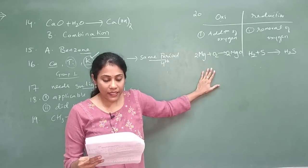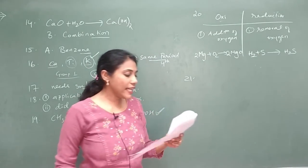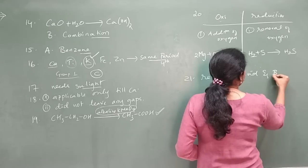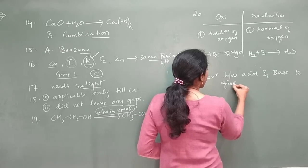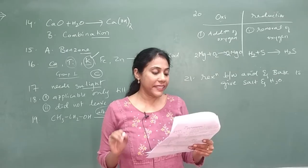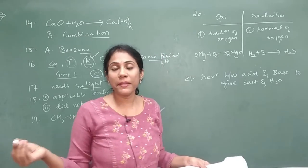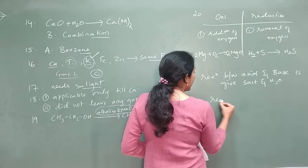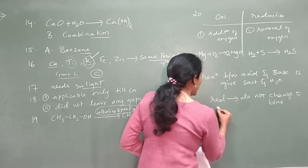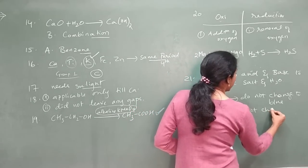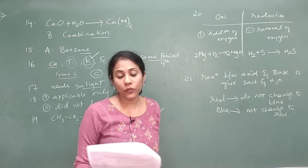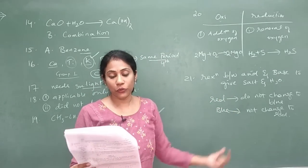Question 21: what are neutralization reactions? A reaction between acid and base to give salt and water is called a neutralization reaction. How can a solution be identified as neutral? By using litmus papers — the colors will not change. Red litmus paper will not change to blue, and blue litmus paper will not change to red. That's how you identify a neutral solution.